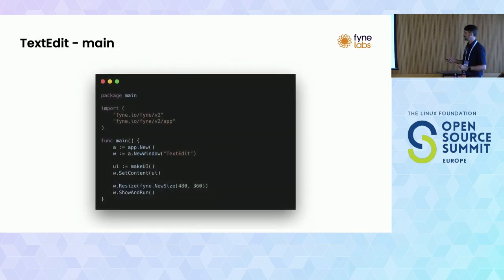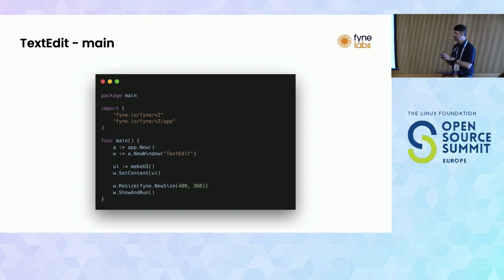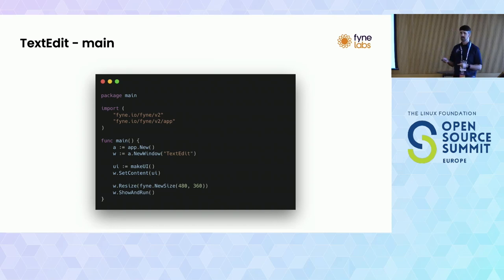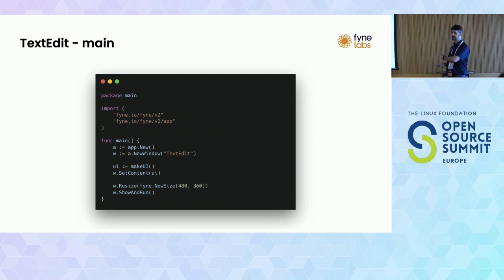We'll start with something very familiar: our main package with an entry point called main and similar imports. This time we're importing the root package - the one that looks like it's called v2, but that's just a versioning semantic; the package is actually called Fyne. We're creating an app, setting the window to be called text edit, creating the user interface in a function called makeUI, and assigning it to the UI variable and passing that into set content.